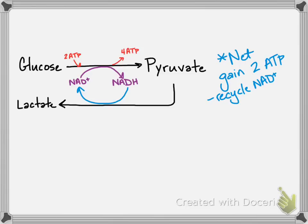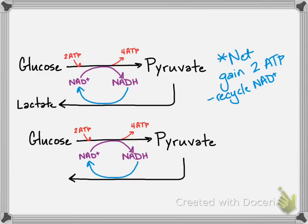Smaller cells, like yeast cells, also do fermentation, but they do a different type called alcohol fermentation, and again it's named for what it produces. So you've got this same process where pyruvate is being converted into another molecule, restoring NAD+, but instead those yeasts are going to produce alcohol and CO2.